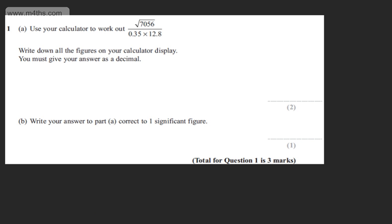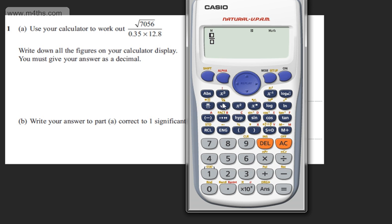The question carries two marks. In the calculator, I'm going to have the square root of 7056 over 0.35 times by 12.8. That's going to give me 75 over 4.